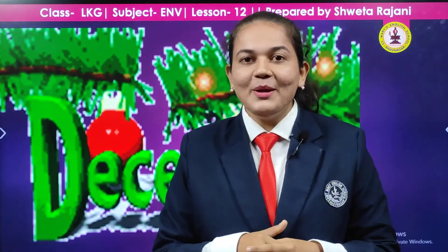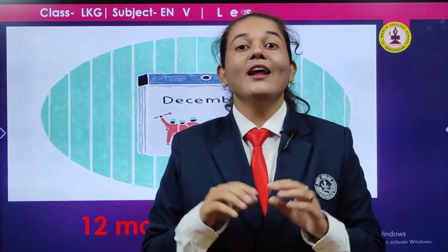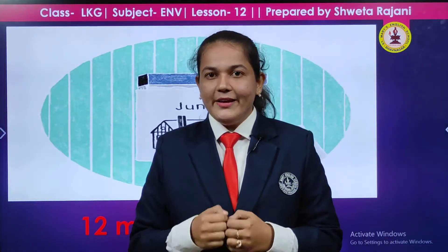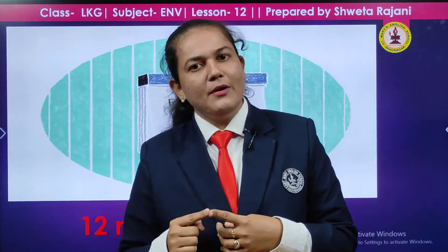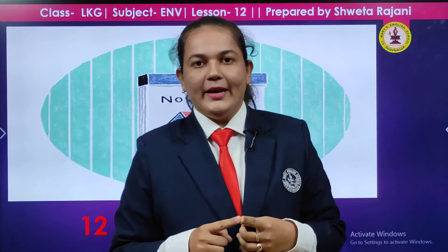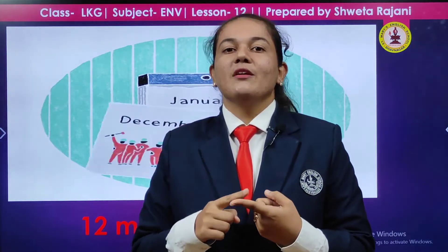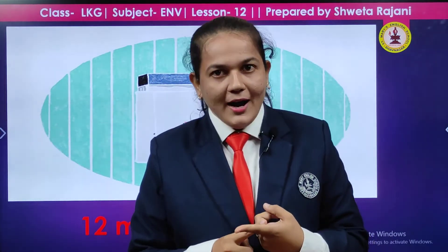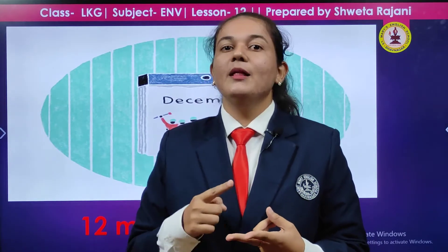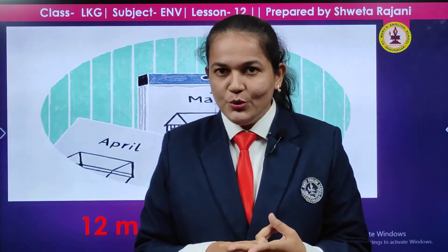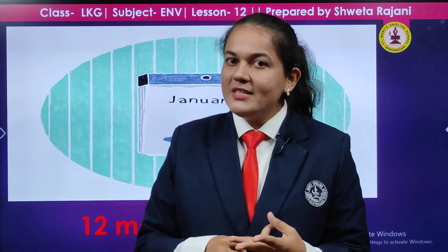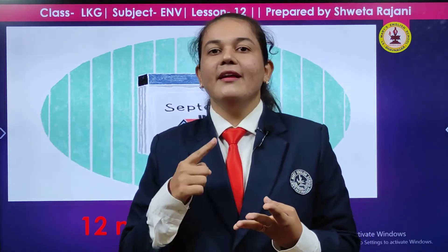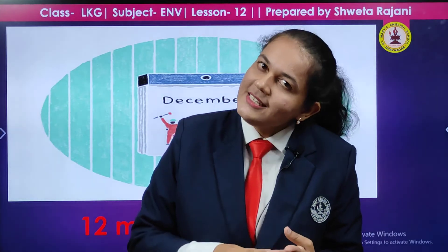So children, how many months are there in a year? There are 12 months in a year, starting from January till December. January, February, March, April, May, June, July, August, September, October, November and December.